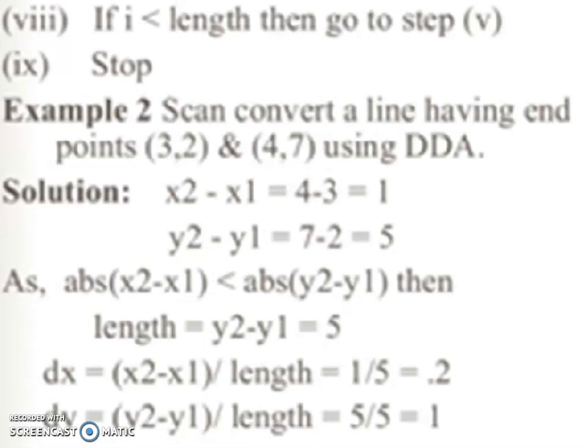Let's have an example. Scan convert a line having endpoints 3,2 and 4,7 using DDA algorithm. Solution: x2-x1 = 4-3 = 1. y2-y1 = 7-2 = 5. Here, absolute value of x2-x1 is 1, which is less than absolute value of y2-y1 which is 5.